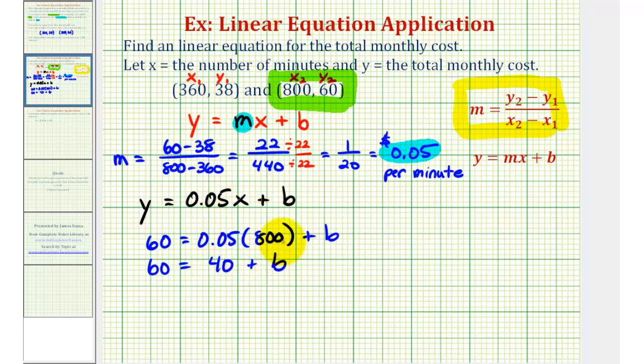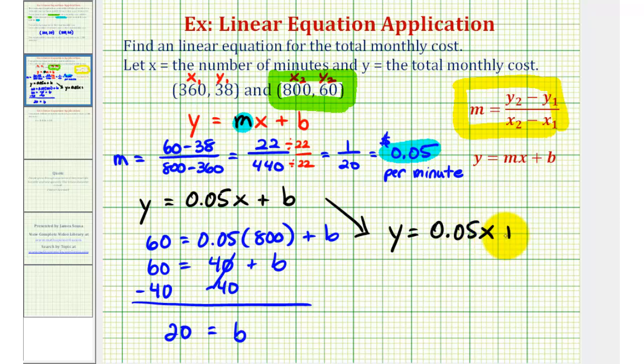So again, this tells us the total monthly fee would be $60, the fee paid for the number of minutes is $40, and b is the flat monthly fee. So to solve this for b, we would subtract 40 on both sides. So we have b, the flat monthly fee, is equal to $20, which means a linear equation that models this cell phone plan would be y equals 0.05x plus 20.